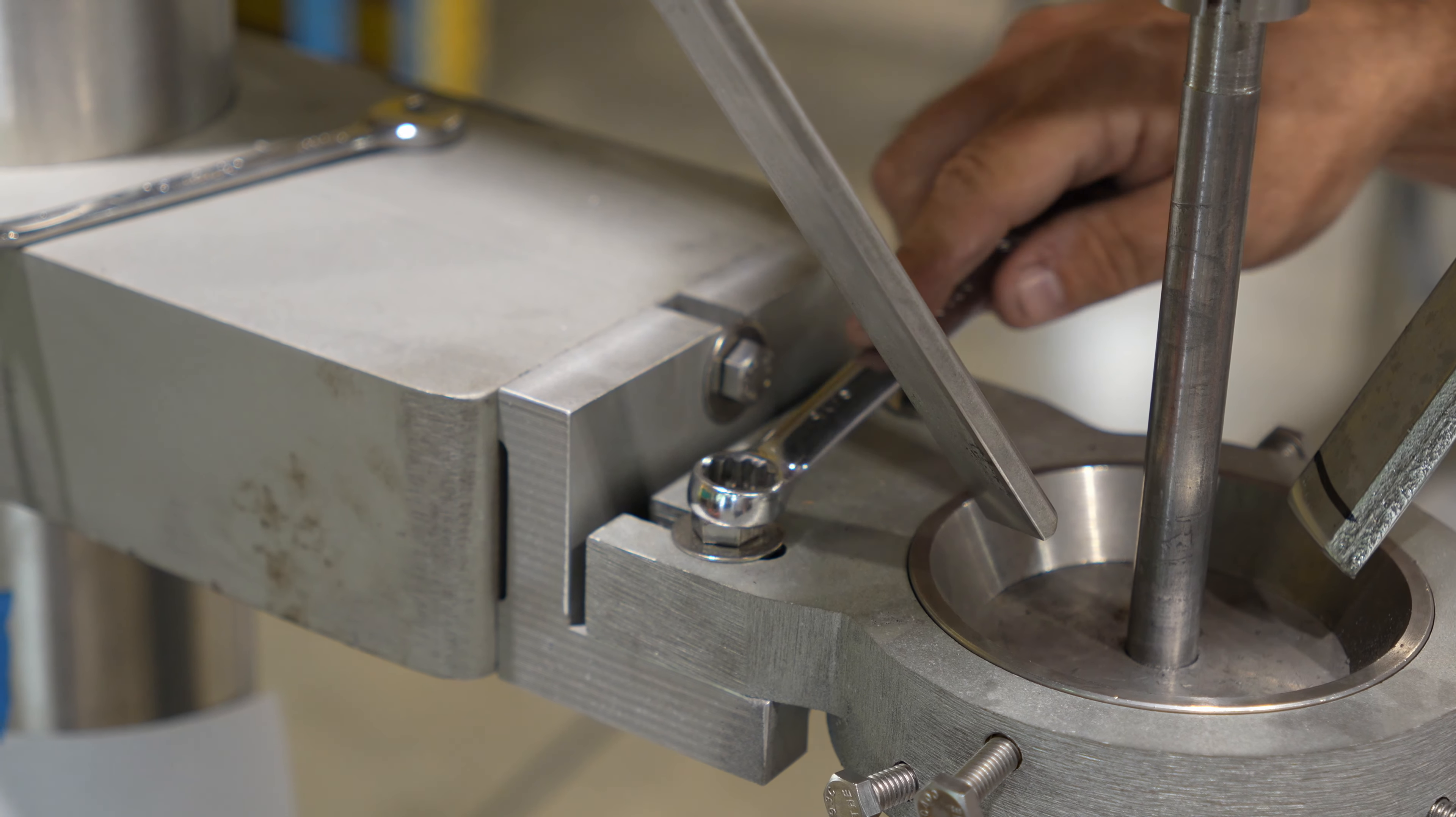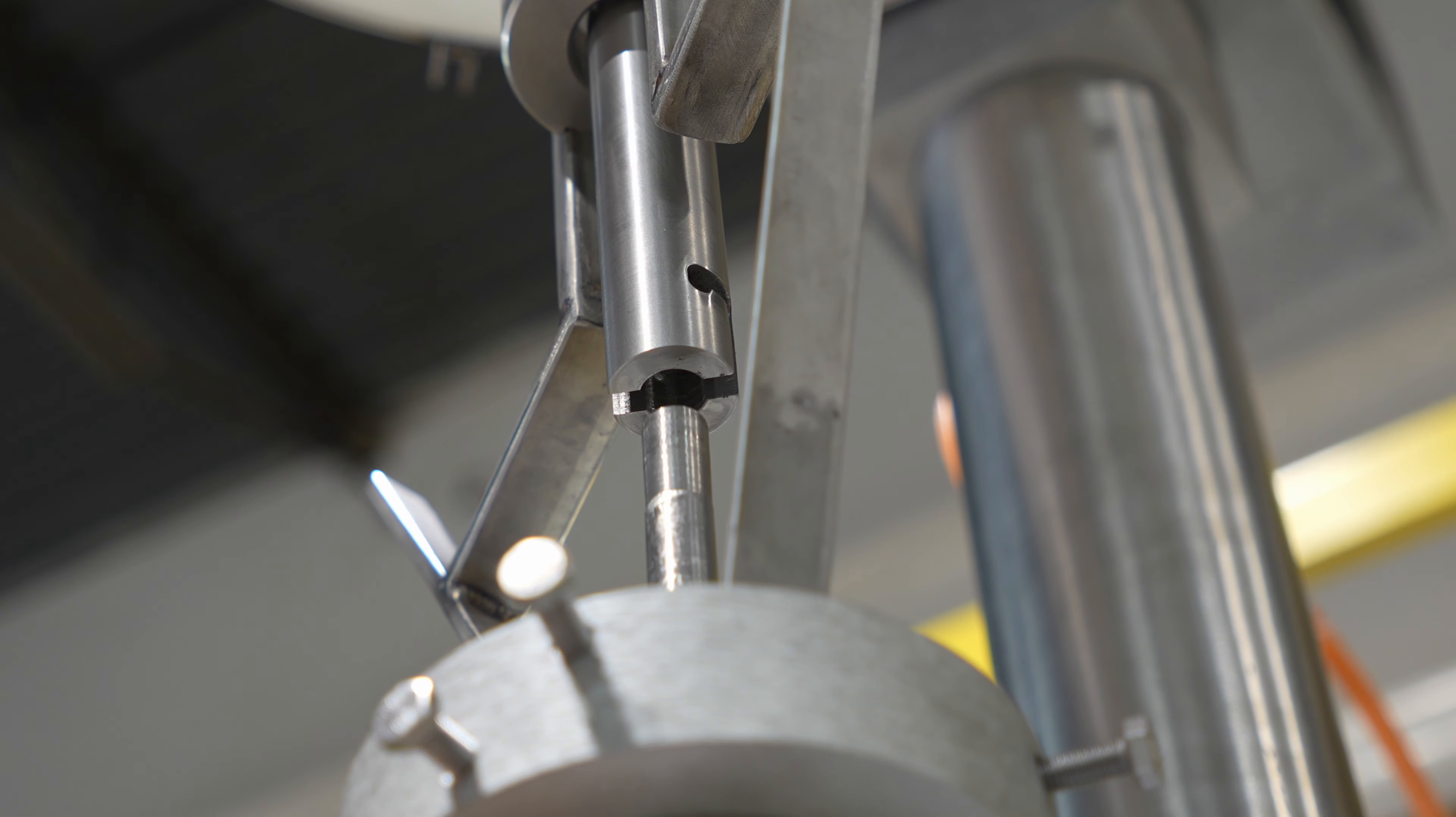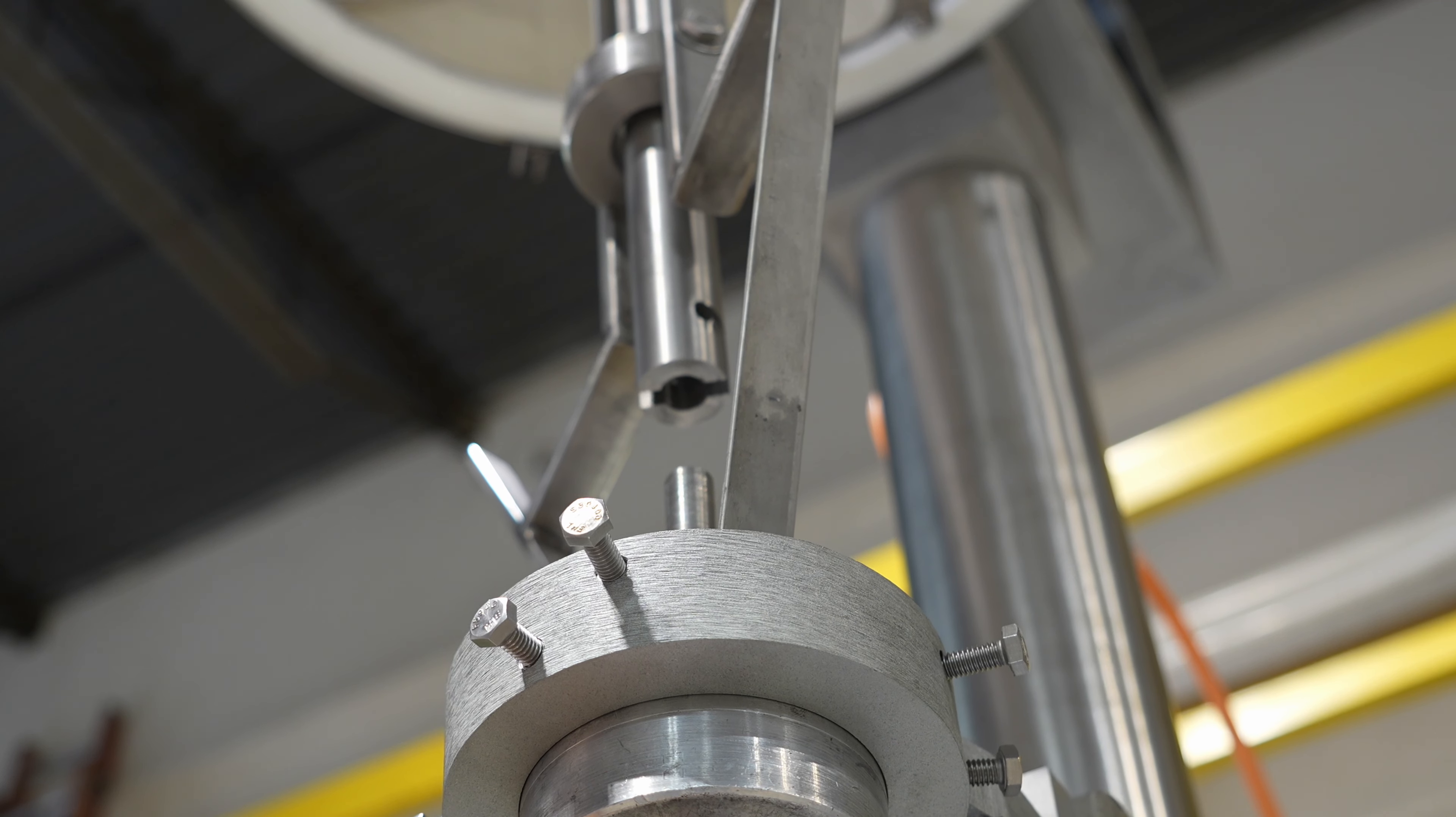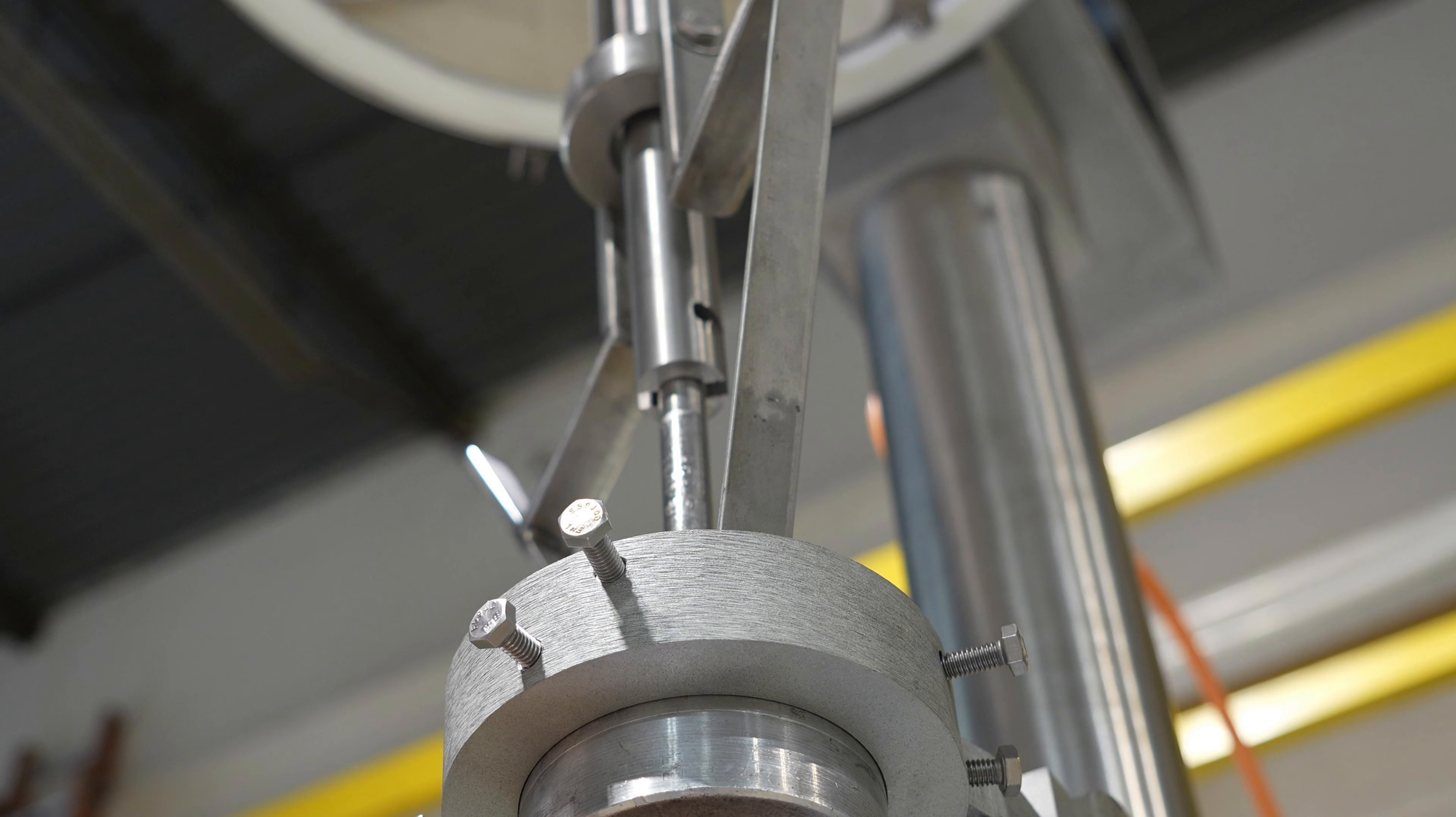After tightening the alignment bolts, the coupling can shift slightly which may throw off the alignment. So always recheck by ensuring that the alignment rod still fits smoothly into the auger shaft.